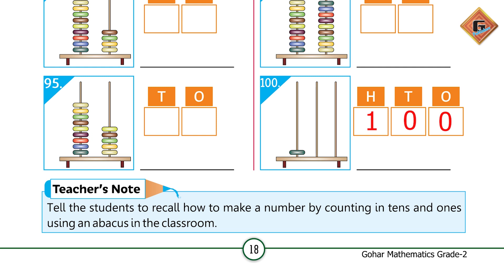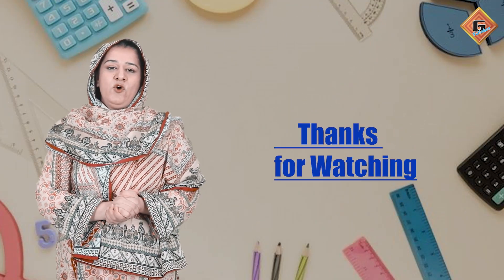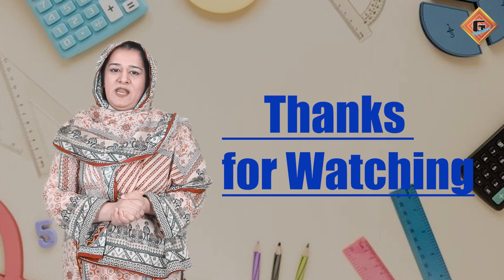Now you write zero under ones, zero under tens, and one under hundreds. The number name is one hundred. Look at your screen for the spellings. Remember, 100 is the smallest three-digit number and 99 is the largest two-digit number. I hope you have understood the concept. Allah hafiz.